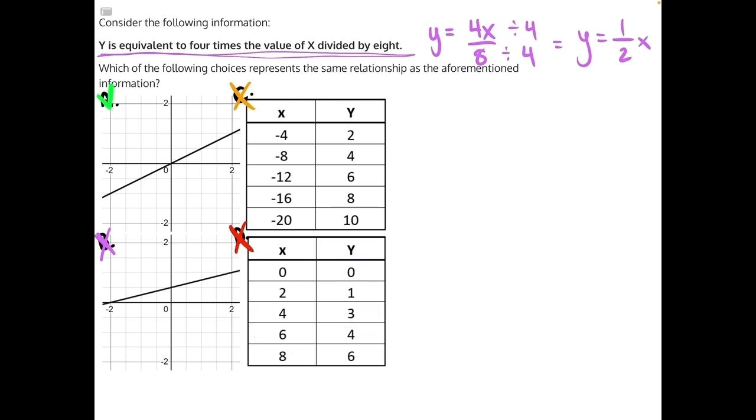If we look at answer choice A and we pick a couple of points, let's take this point here at over 2, up 1, 2 comma 1. And then we'll take another point here at over 1, up 1 half.